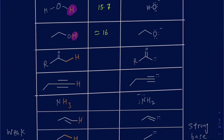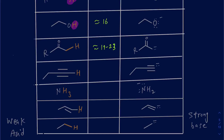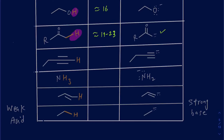Then we have alpha protons with respect to the carbonyl. The pKa of these is anywhere between 19 and 23, depending on the other groups present — so they are less acidic than alcohols and water. After losing the proton, the conjugate base has a negative charge on carbon. For terminal alkynes, the terminal proton is acidic; after losing it, the conjugate base is a carbanion on a triple-bonded carbon, and the pKa is around 25 — less acidic than an alpha proton near a carbonyl.